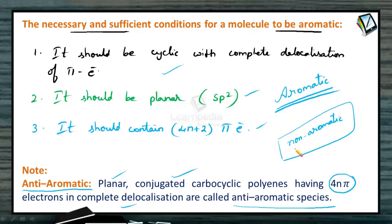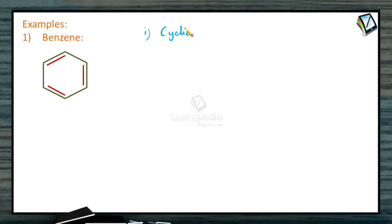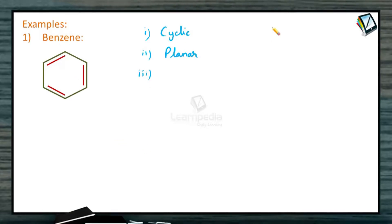Let us understand this concept by taking some examples. The first one is benzene. From the structure it is very clear that benzene is a cyclic compound. All the carbon atoms of benzene are sp2 hybridized, so definitely the molecule is planar. Now we need to check whether benzene has 4n+2 pi electrons — as three double bonds are there, total 6 pi electrons are present.